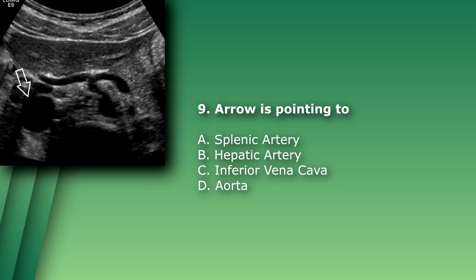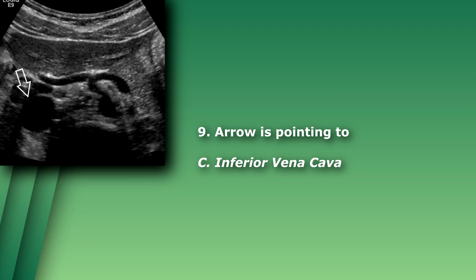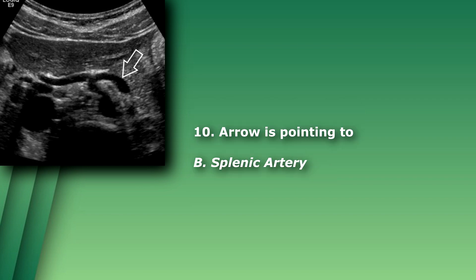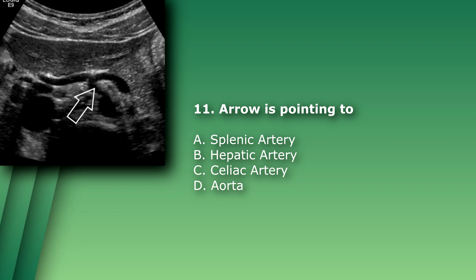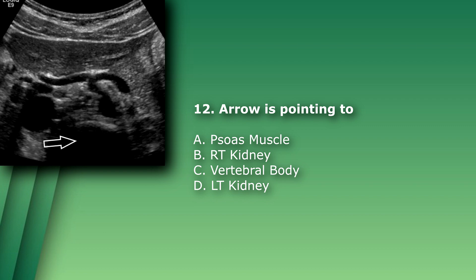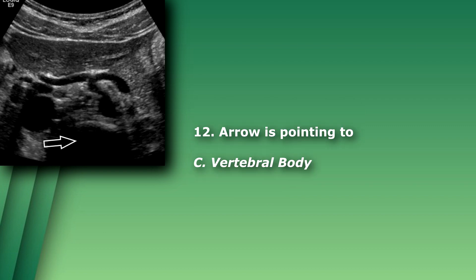Questions 9 through 12 are image-based vessel and anatomy identification. Question 9: the arrow is pointing to C) inferior vena cava. Question 10: the arrow is pointing to A) splenic artery. Question 11: the arrow is pointing to C) the celiac artery. Question 12: the arrow is pointing to C) vertebral body.